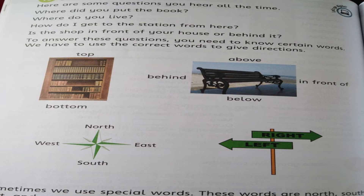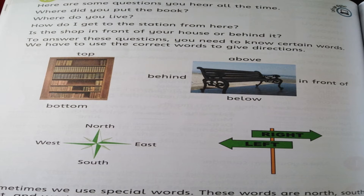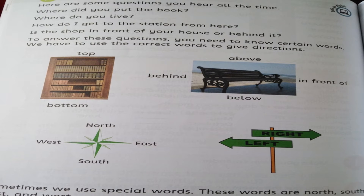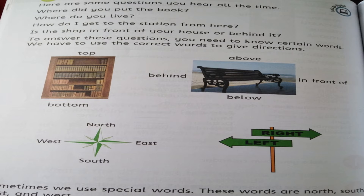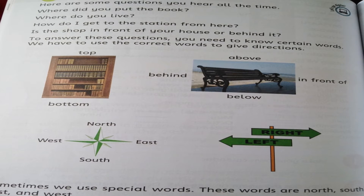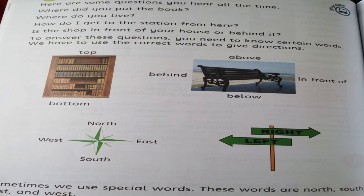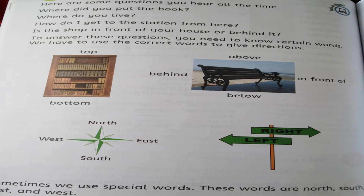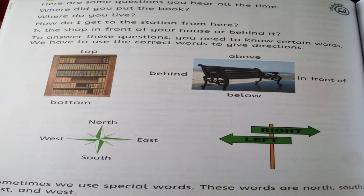Bottom means the lowest point — the bottom of the mountain where it meets normal ground, which is the base. Above means at a higher level. Above means kisi cheez ka upar. For example: the plane flew above the clouds.